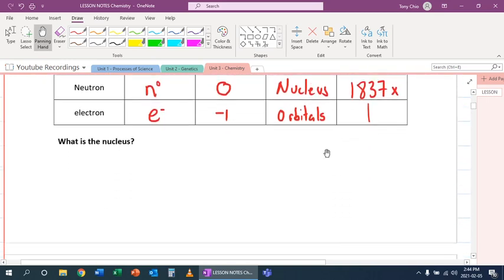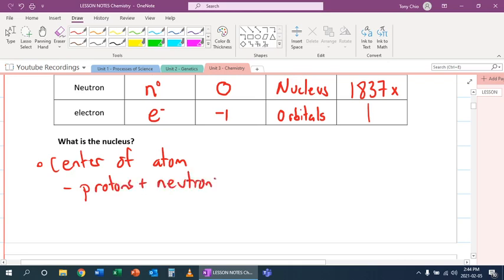So what is a nucleus? Well, a nucleus is the center of the atom. And it has, basically, our protons and neutrons. And because it is the center of the atom, it contains our protons and neutrons,